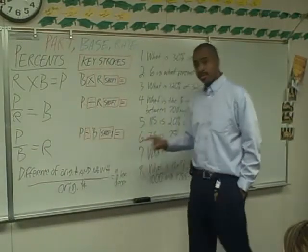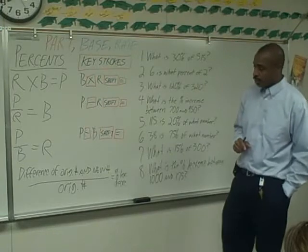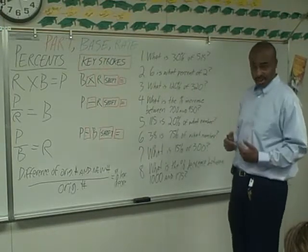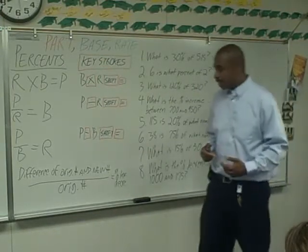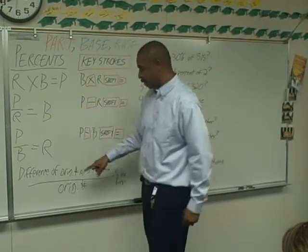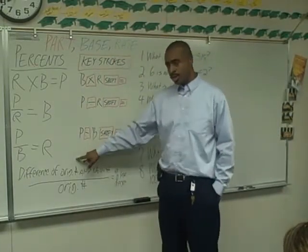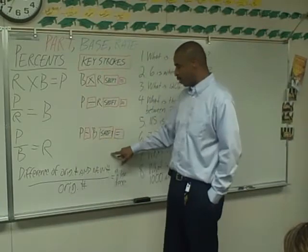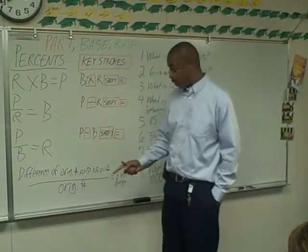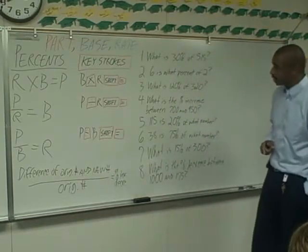There's a fourth percent formula which helps you calculate percent increase or decrease. The way you calculate percent increase or decrease is you take the difference of the original number and the new number, divide it by the original number, and that gives you your percent increase or decrease.